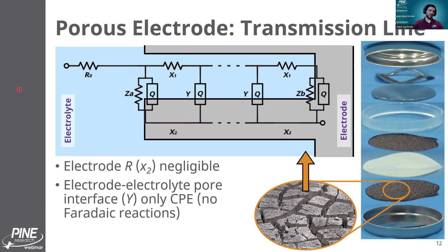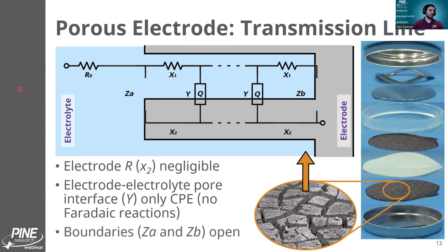The lack of charge transfer means we can boil the Y element down to just capacitance. Finally, as I mentioned with the open boundary — the reflecting or blocking boundary — the way that's handled is that ZA and ZB are infinite impedance, or open. So there's actually an open part of the circuit. What you're looking at right here is what is sometimes referred to as an open transmission line model.